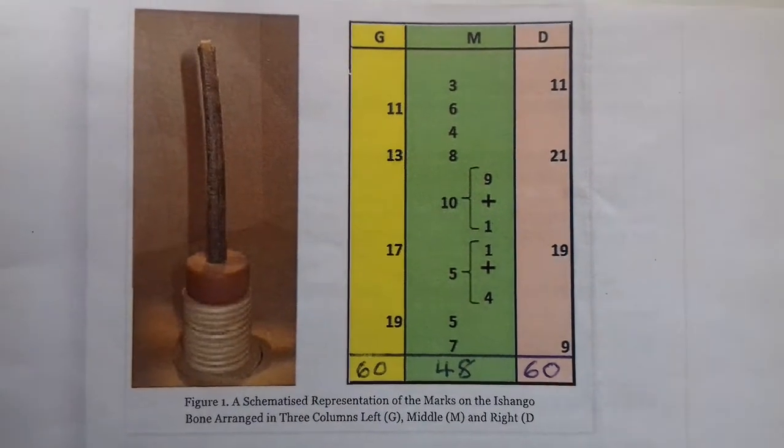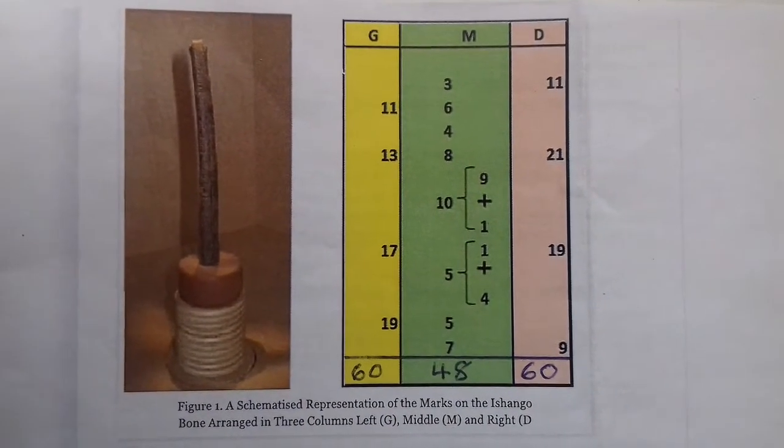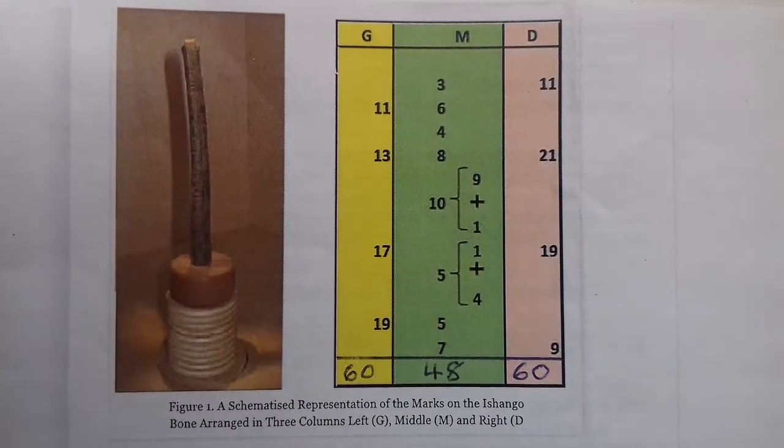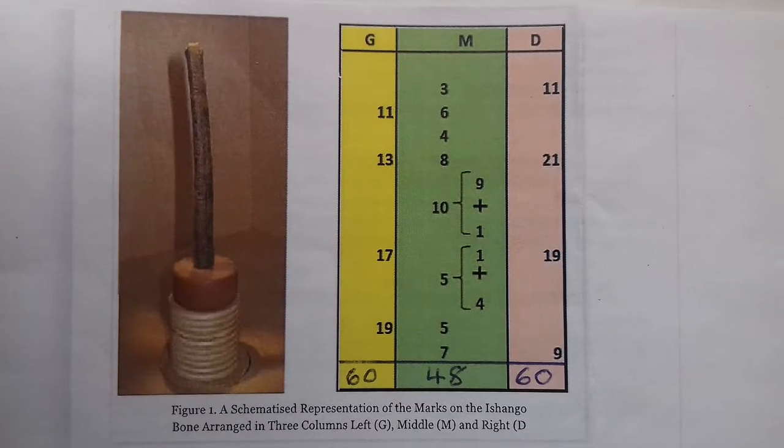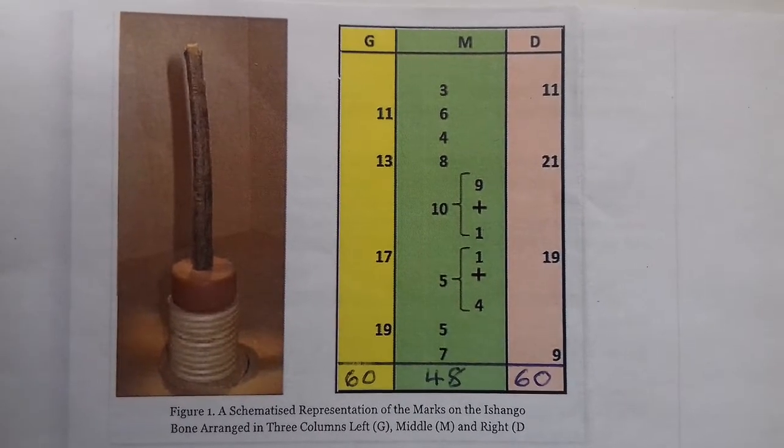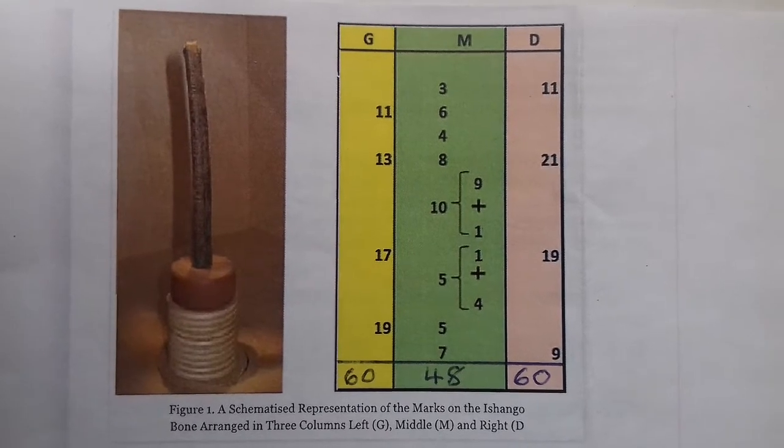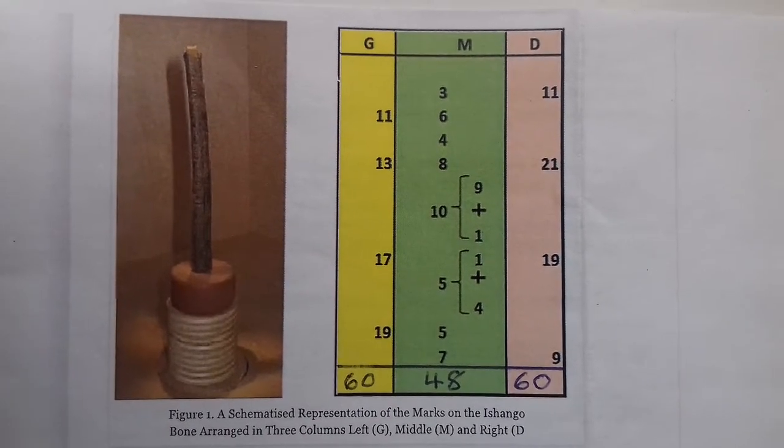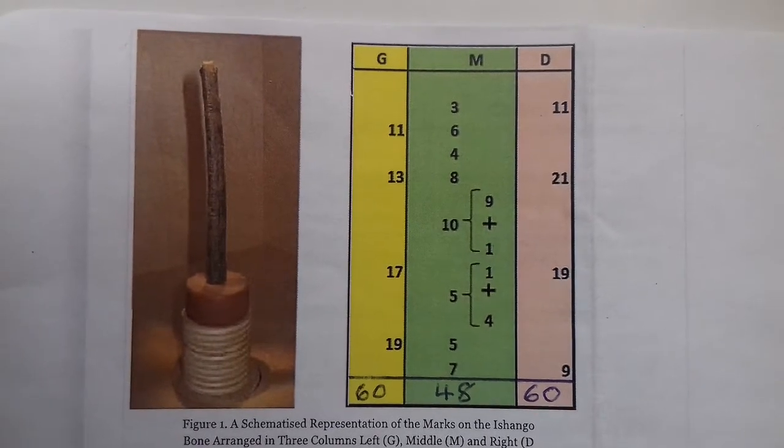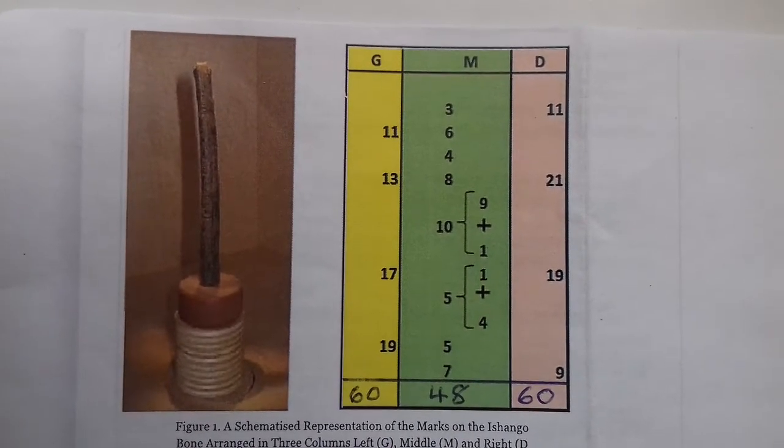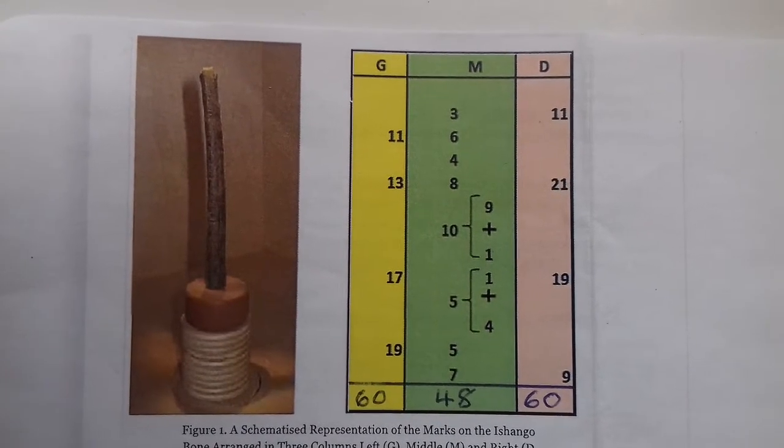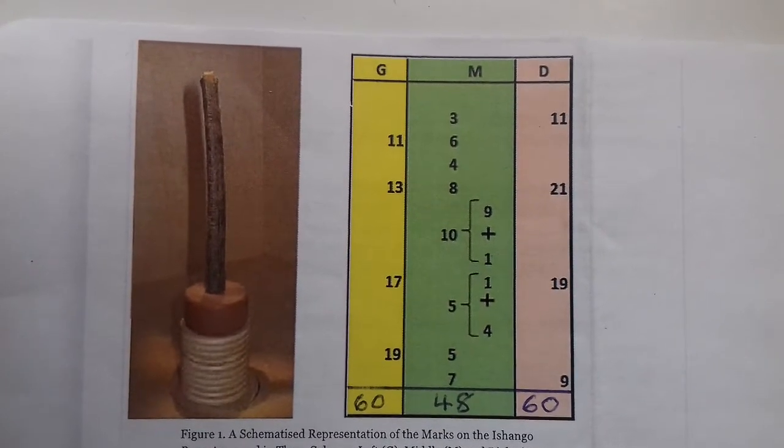We notice that the total of all of these columns are a factor of 12, so 60 is 5 times 12, which is the total of columns G and D, and 48 is 4 times 12. This factoring of 12 seems not to look fortuitous or accidental. It looks very deliberate.